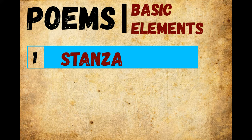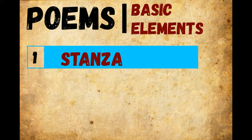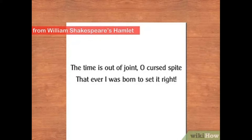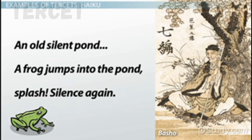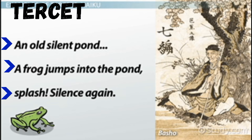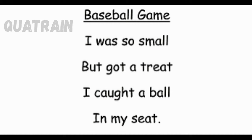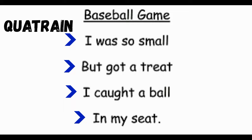There are numerous types of stanzas ranging in complexity and length. Here are some of the most common types of stanzas. A couplet is a pair of successive lines of meter in poetry. It usually consists of two successive lines that rhyme and have the same meter. A tercet is composed of three lines of poetry, forming a stanza or a complete poem. A quatrain is a type of stanza, or a complete poem, consisting of four lines.